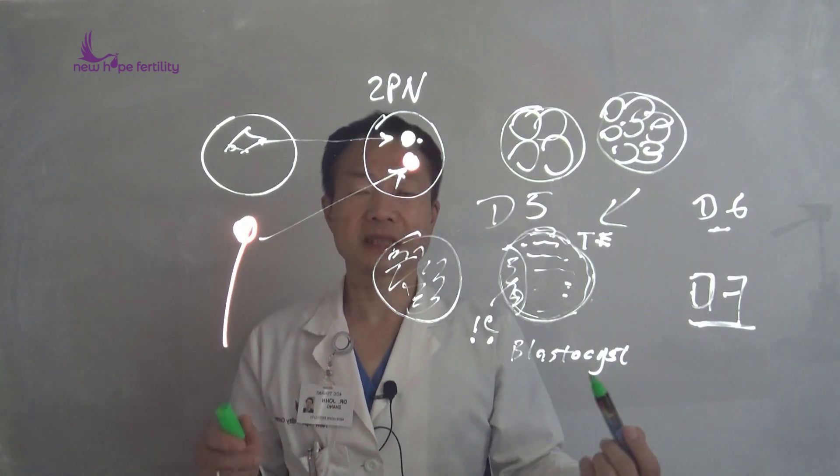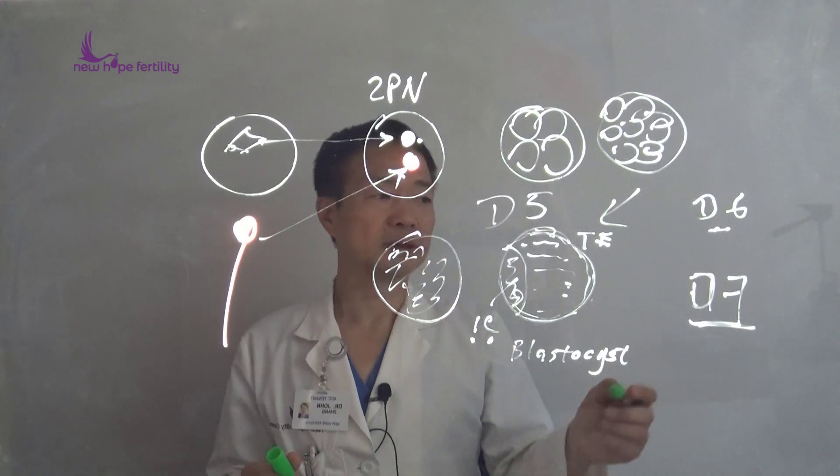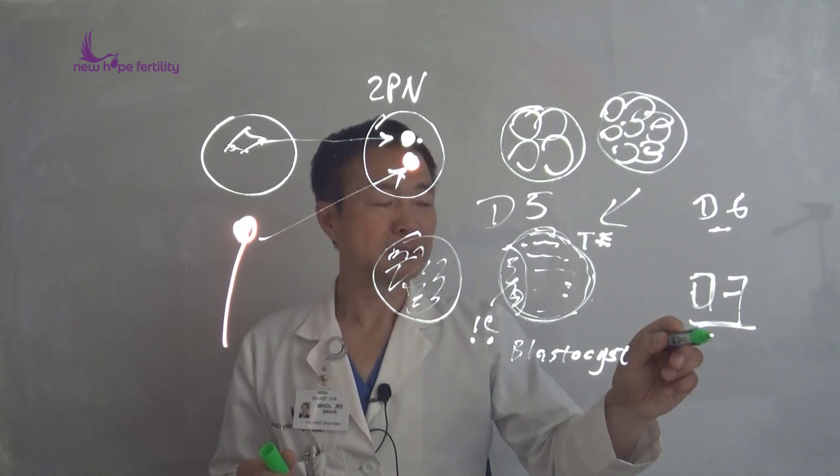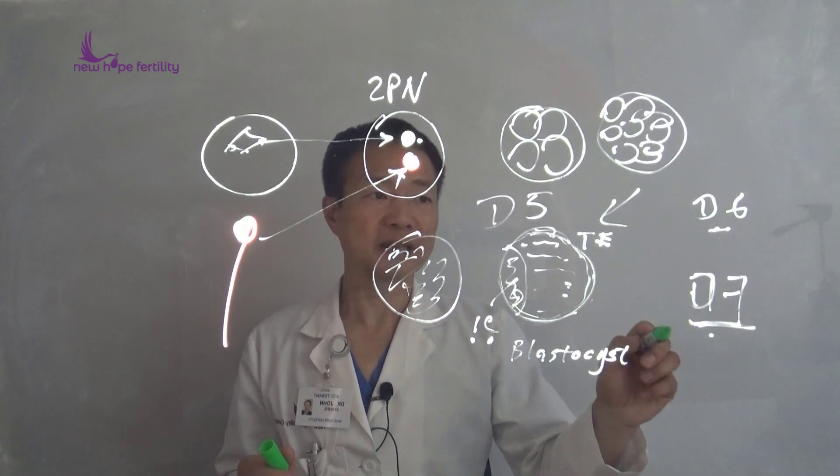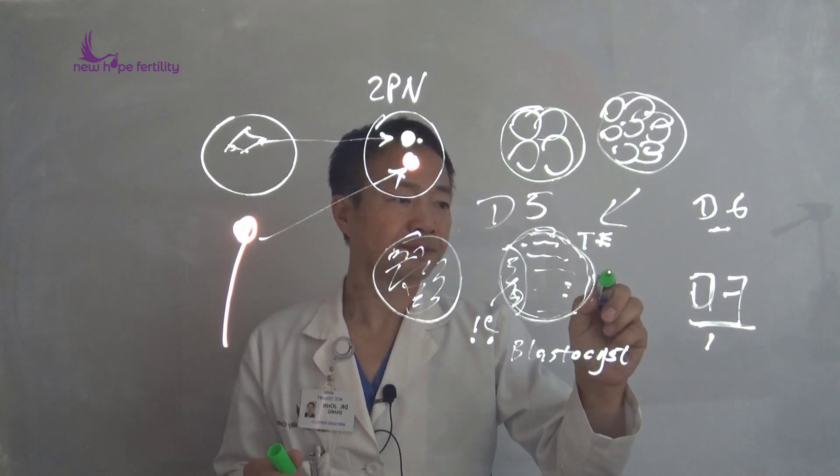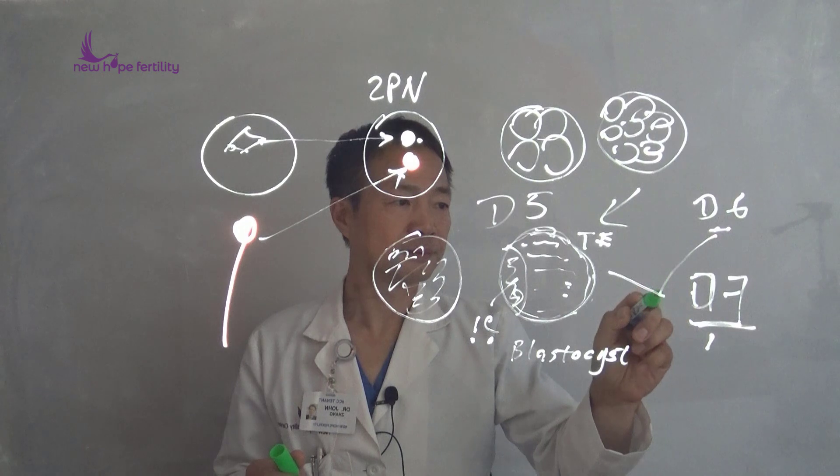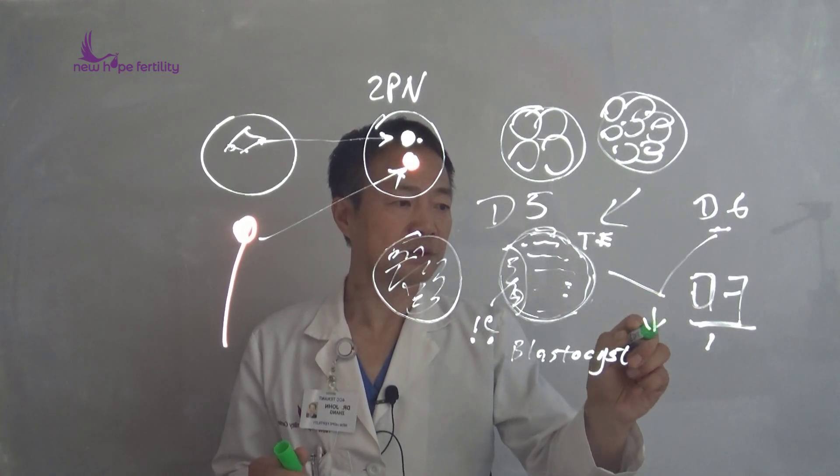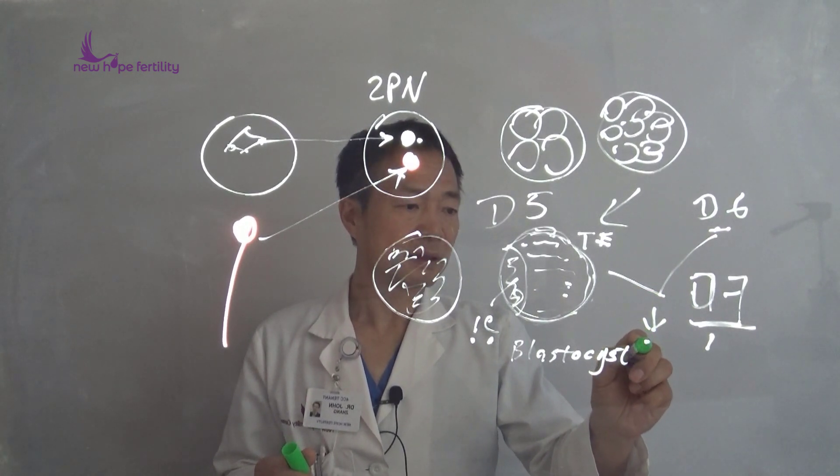However, all studies and our data show that day 7 embryos can still make absolutely healthy live birth babies, but the chance is reduced by about 30%.